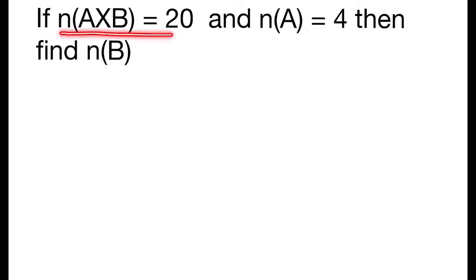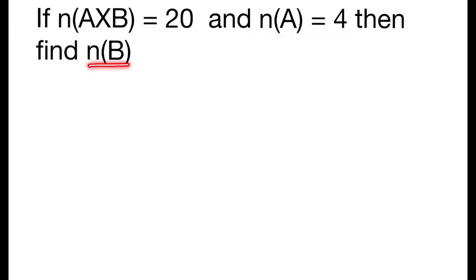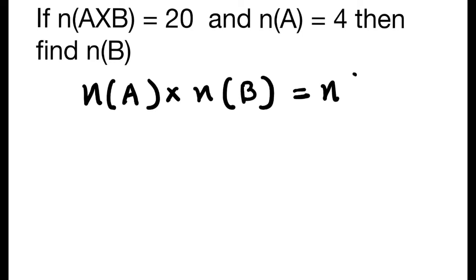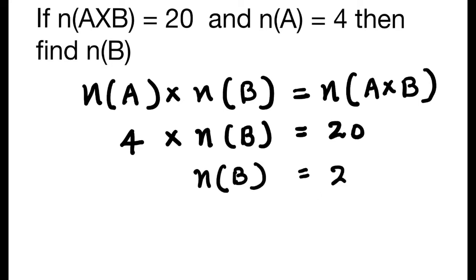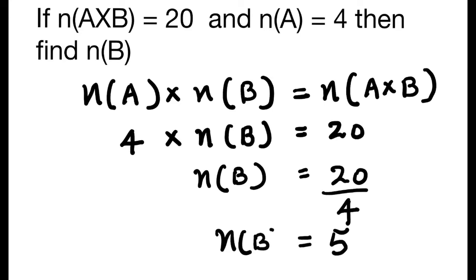Problem: If the number of elements in A cross B is equal to 20 and the number of elements in set A is equal to 4, then find the number of elements in set B. Since the number of elements in A multiplied by the number of elements in B equals the number in A cross B, we have 4 multiplied by n(B) = 20, so n(B) = 20 divided by 4, which equals 5.